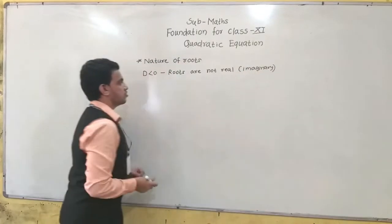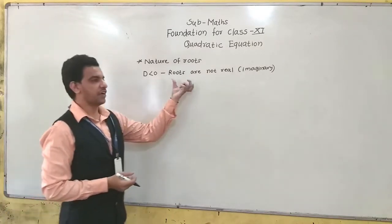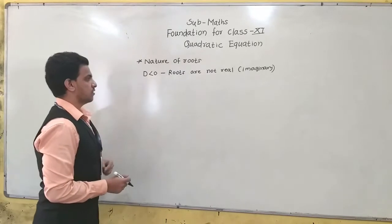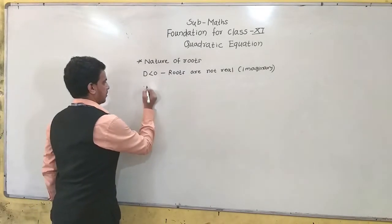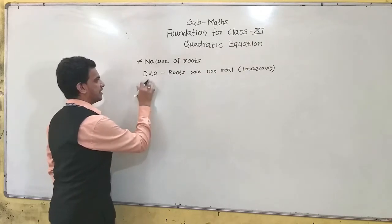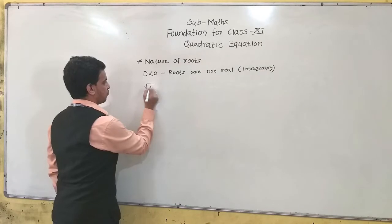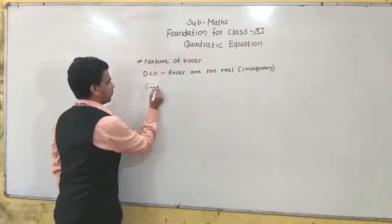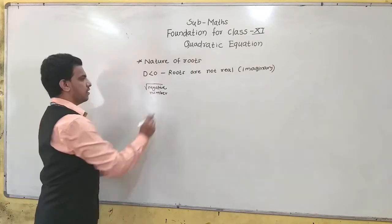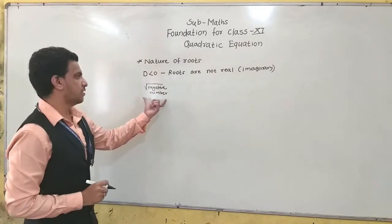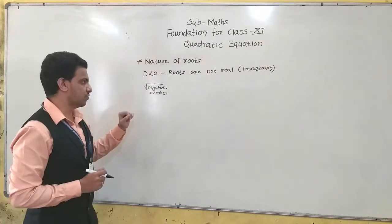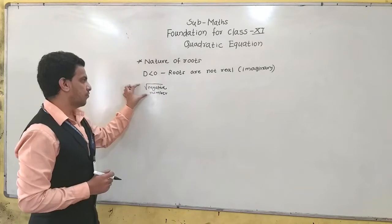If roots are not real, how do we find those roots? When D is less than 0, we get a negative value under the square root. We cannot find the square root of a negative number in the real number set, so we need to define something new for that.